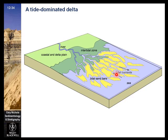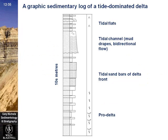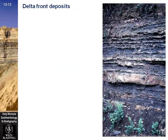A tide-dominated delta is characterized by numerous tidal sand bars and mud ridges in the intertidal zone. A graphic sedimentary log of a tide-dominated delta is characterized by mud along tidal channels and flats and sand bars at the delta front. These are delta deposits dominated by mud and silt with minor sand layers.